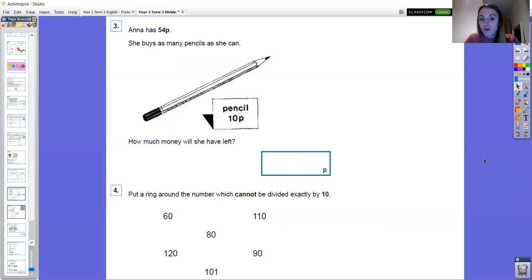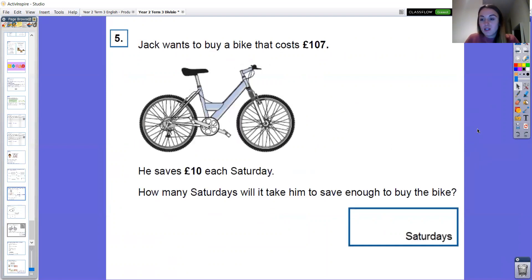Question three and four. Here it says put a ring around the numbers but you can just write the numbers in your book. Question five.